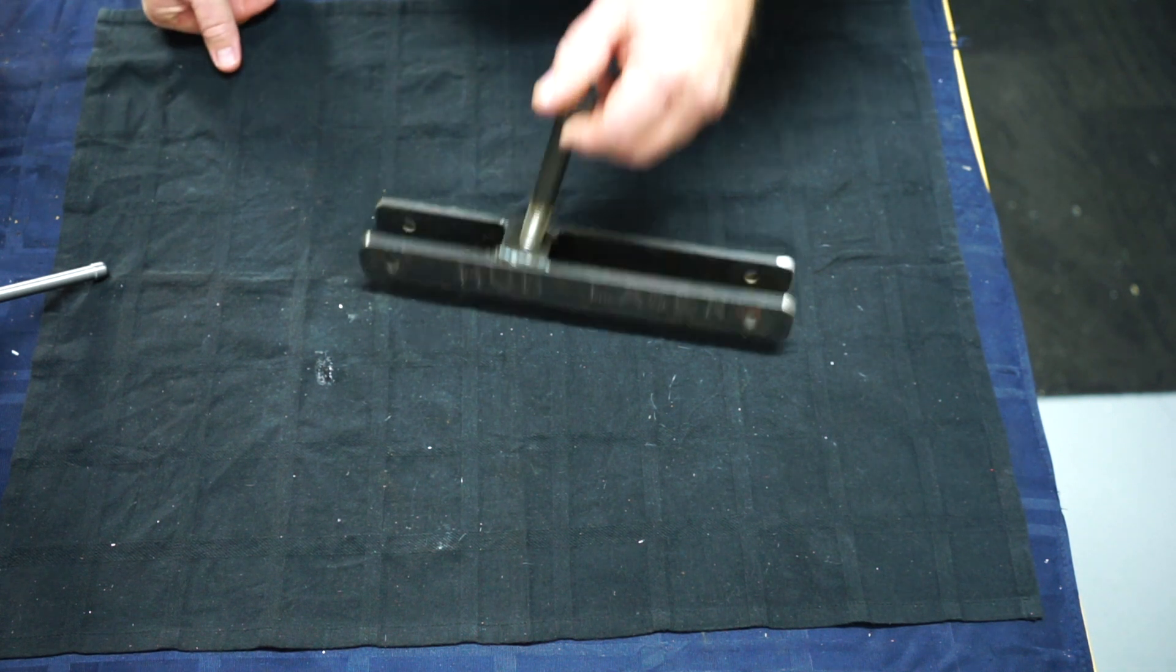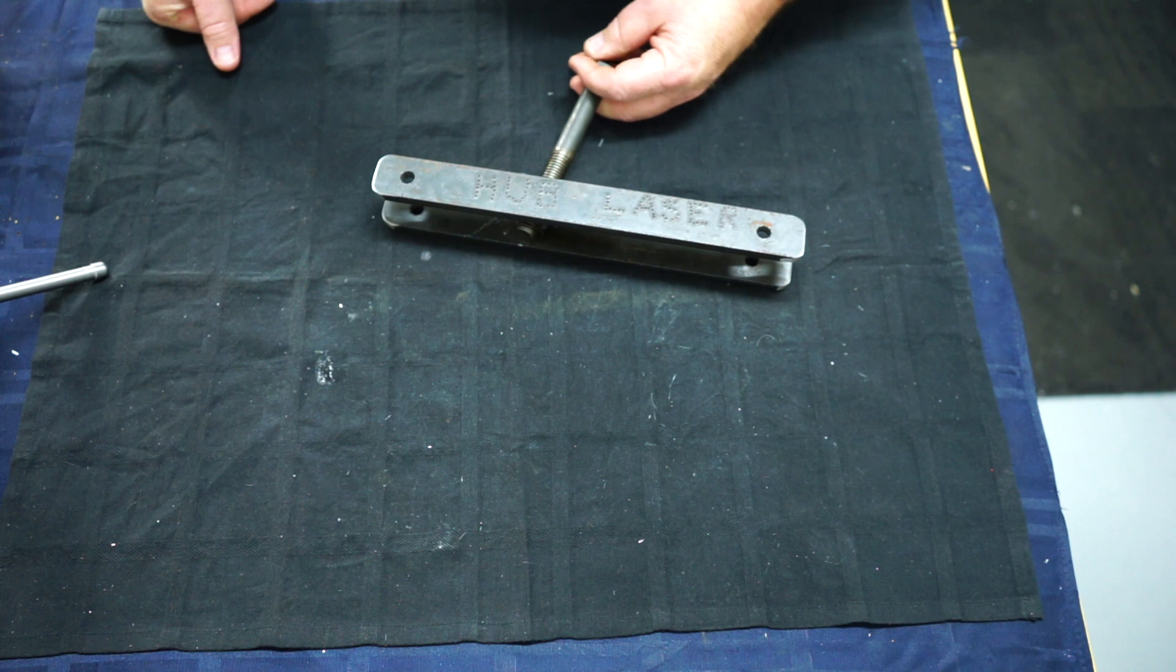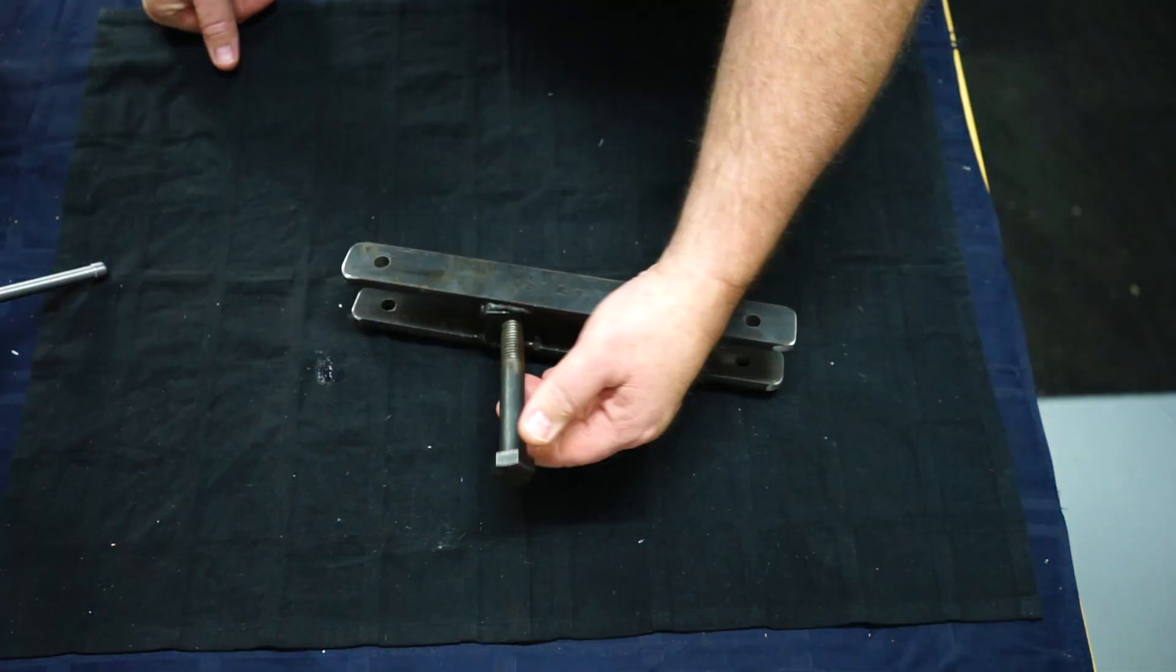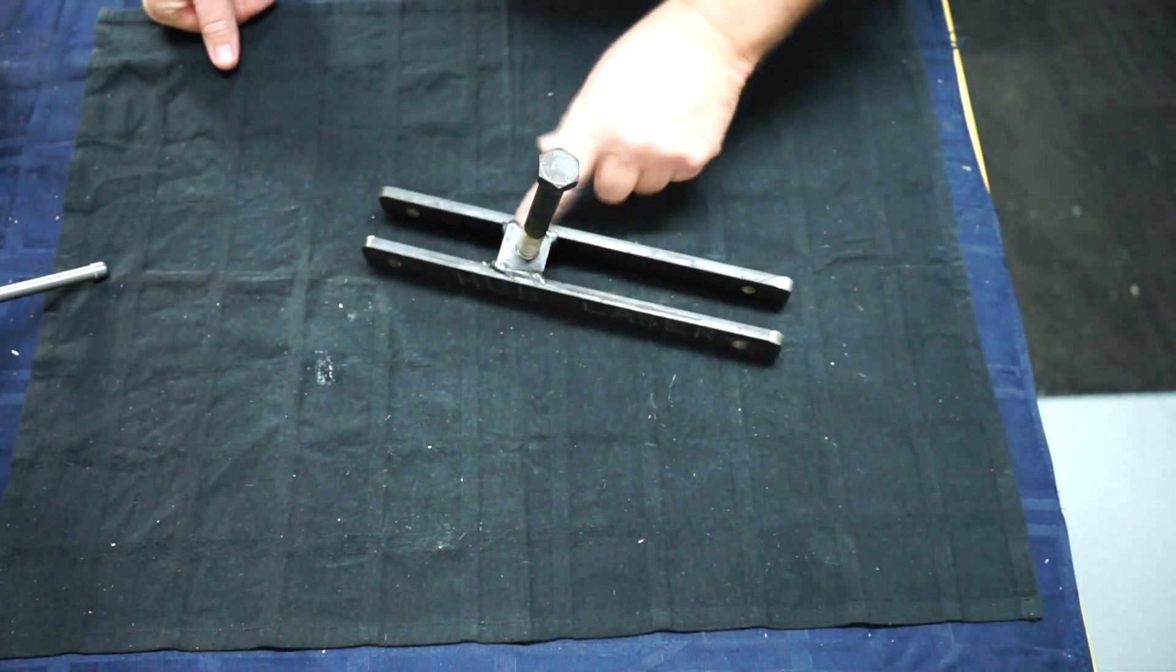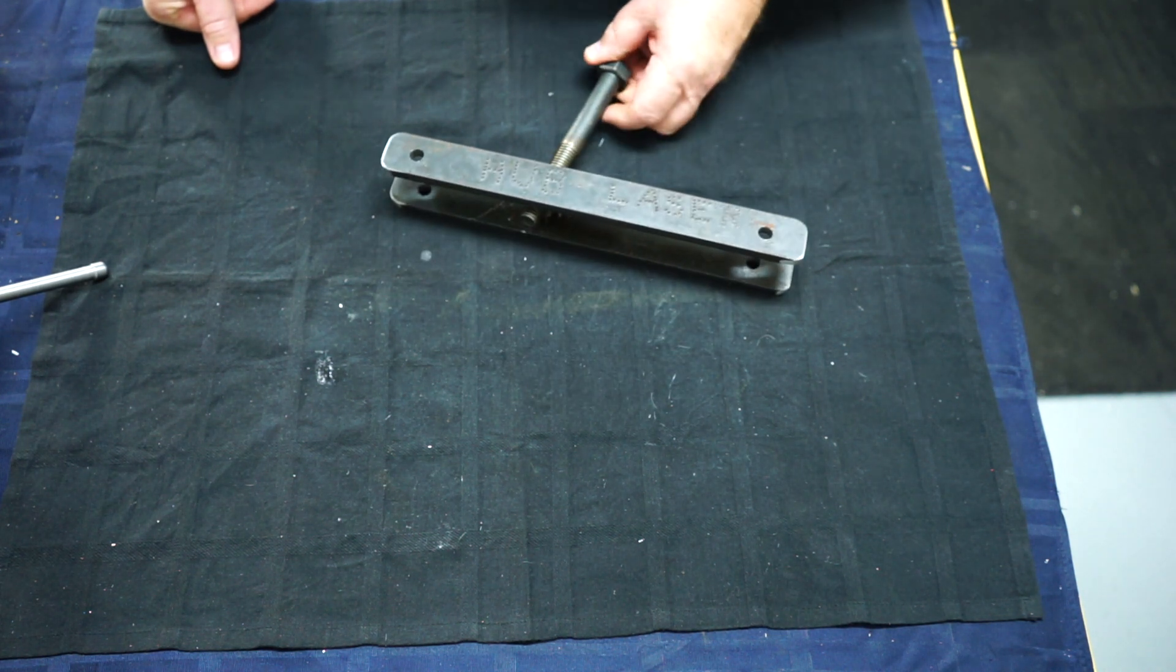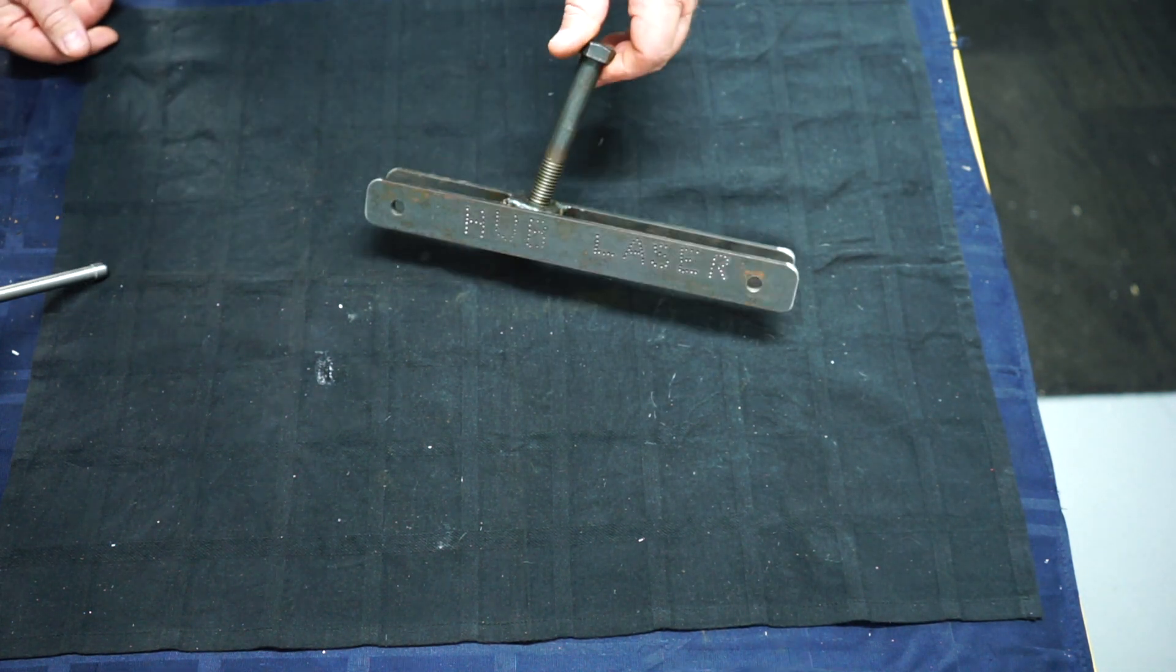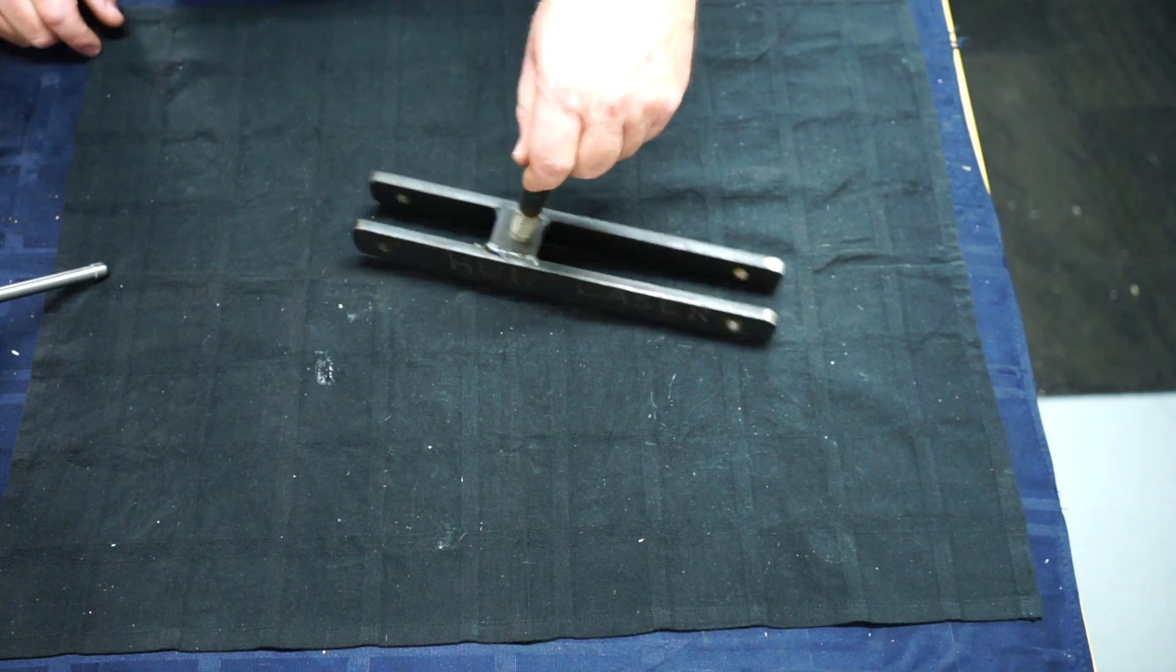And back in the day, that would have been once again measured and marked out by hand and arc welded, not MIG welded. But it did the job. So there you go. There's a little hub puller that I made.